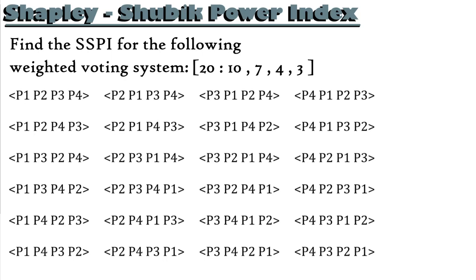Looking at the first coalition — P1, P2, P3, P4 — P1 has 10 votes, not enough to reach the quota of 20. P2 has 7, so 10 plus 7 is 17, still not enough. P3 has 4, and 10 plus 7 plus 4 is 21 — that is enough. So we underline player 3 as the pivotal player. Unlike Banzaf, which can have multiple critical players per coalition, Shapley-Shubik has exactly one pivotal player per coalition.